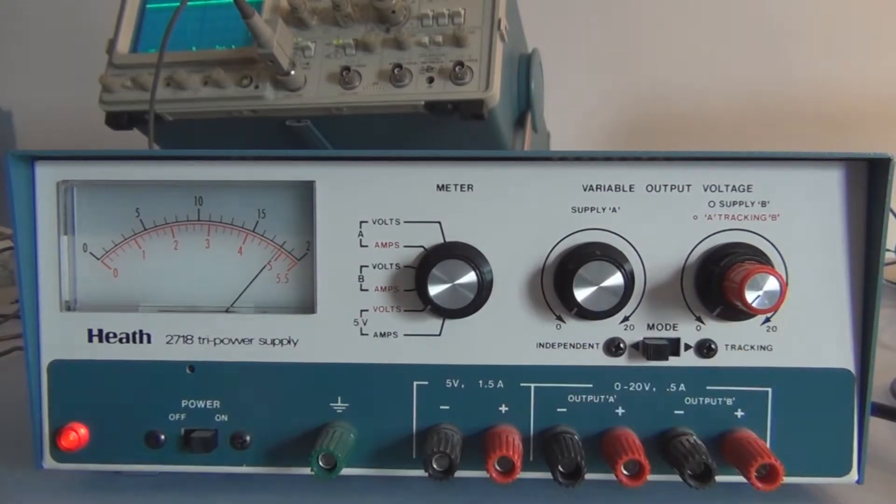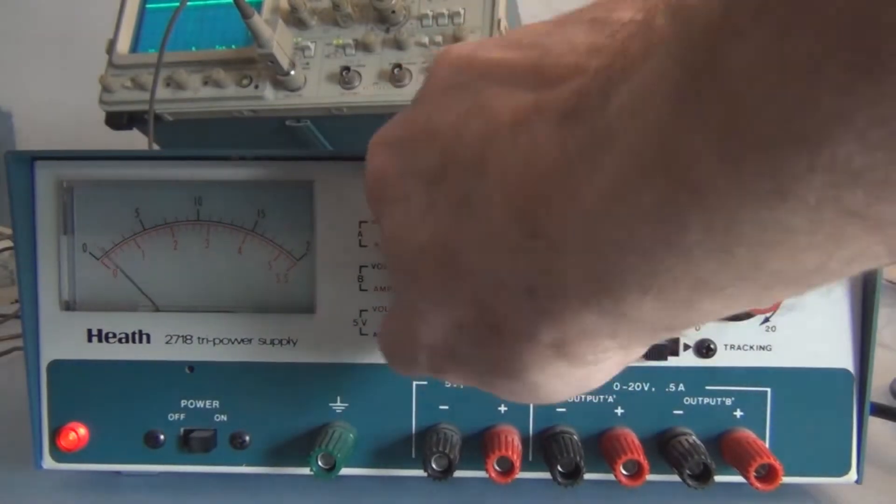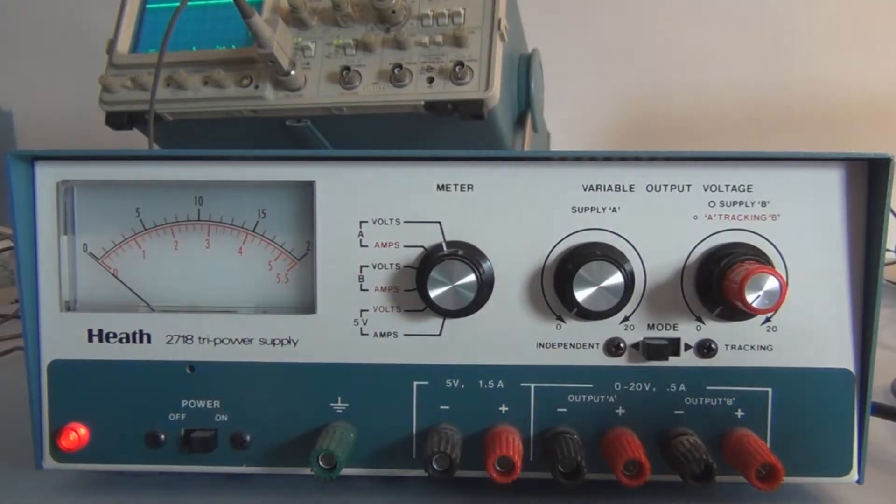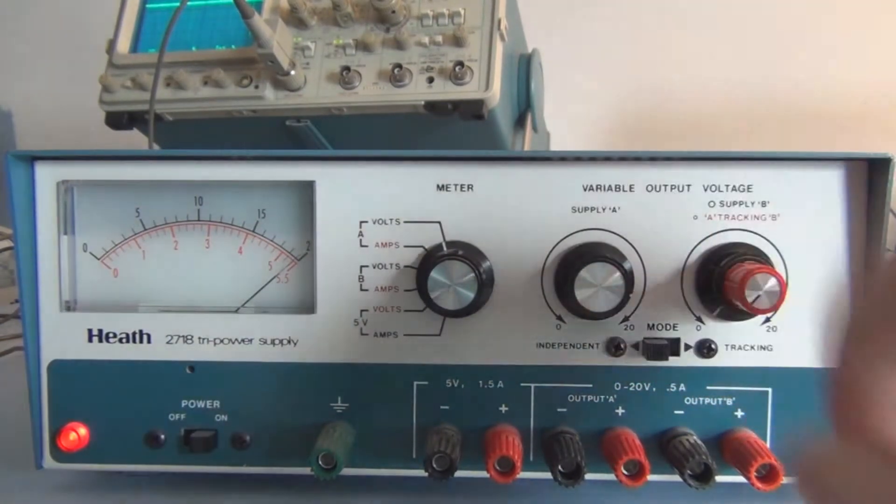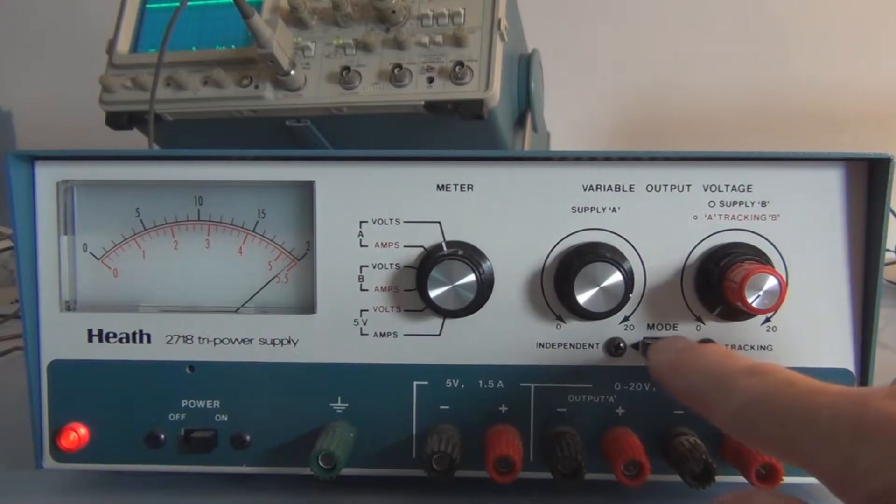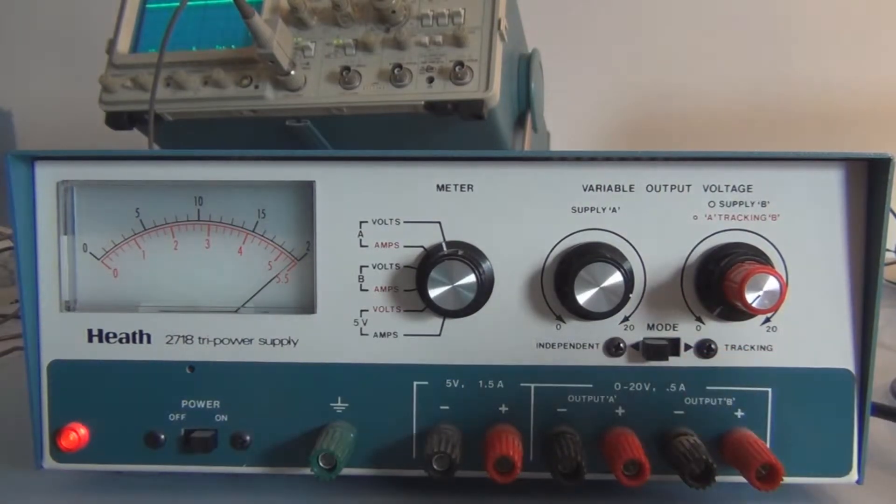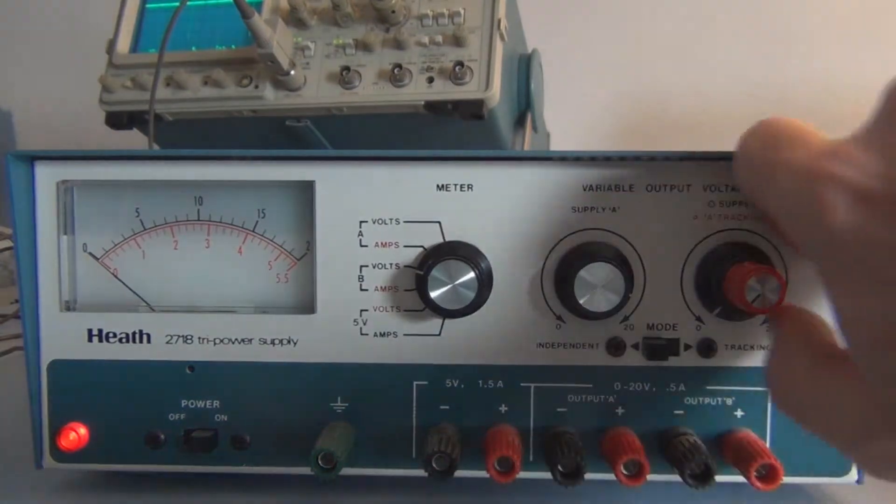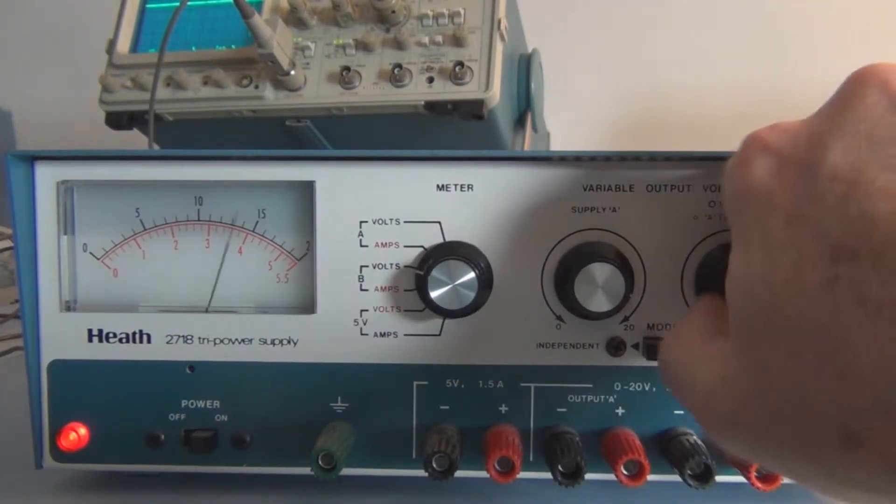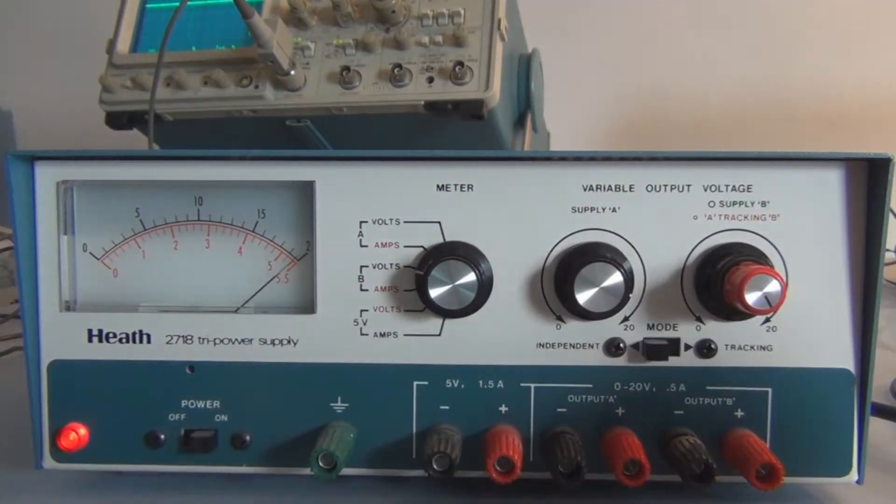So let's switch over to supply A on volts and it varies up to zero to 20, that's independent, and we can switch to supply B, varies up to 20 volts.